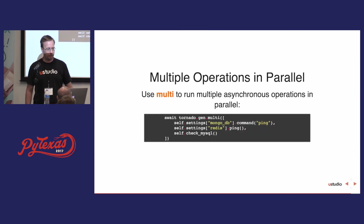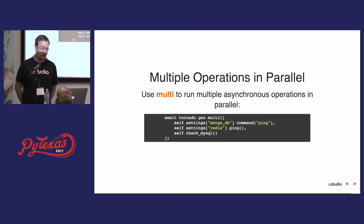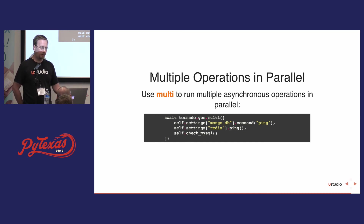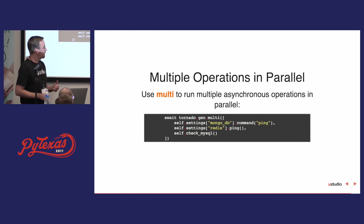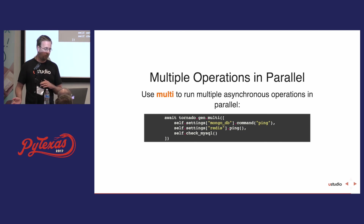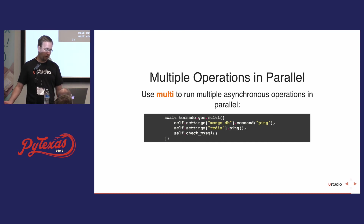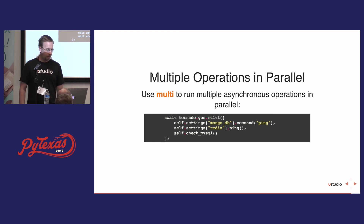The last thing I wanted to show is how to do multiple asynchronous operations at the same time. You can use the Tornado multi function, passing in either a dictionary or a list of futures or coroutine objects. It will run them all in parallel and return the results as a list or dictionary. If any of them raises, that exception gets bubbled up by default.